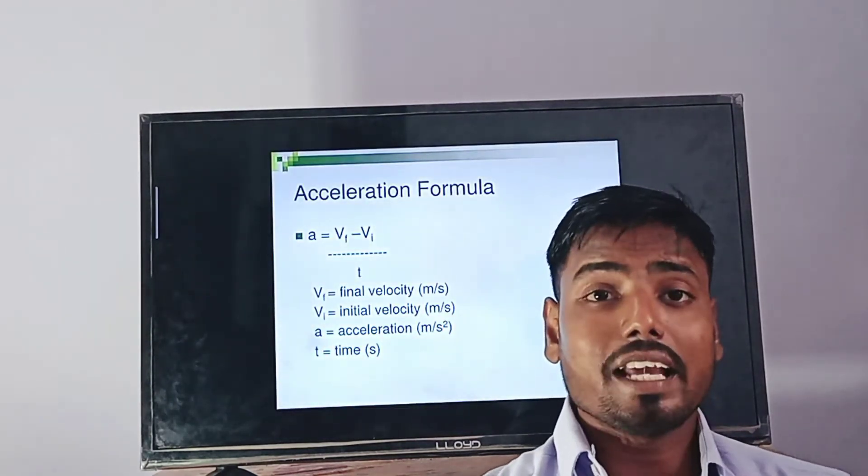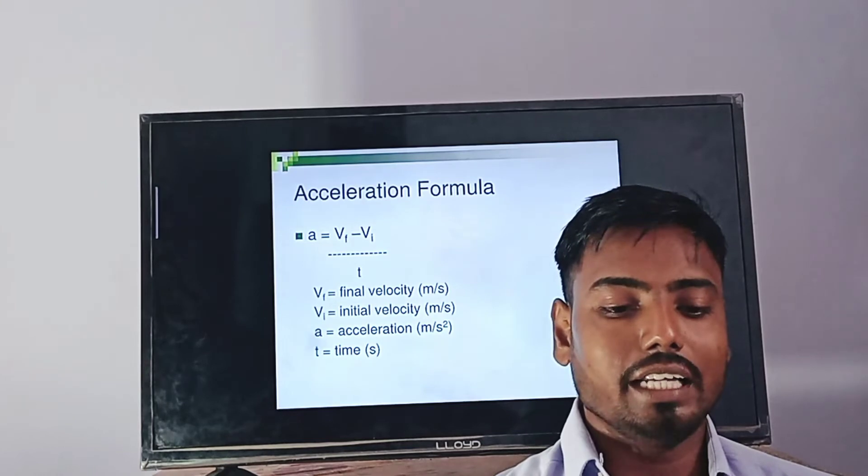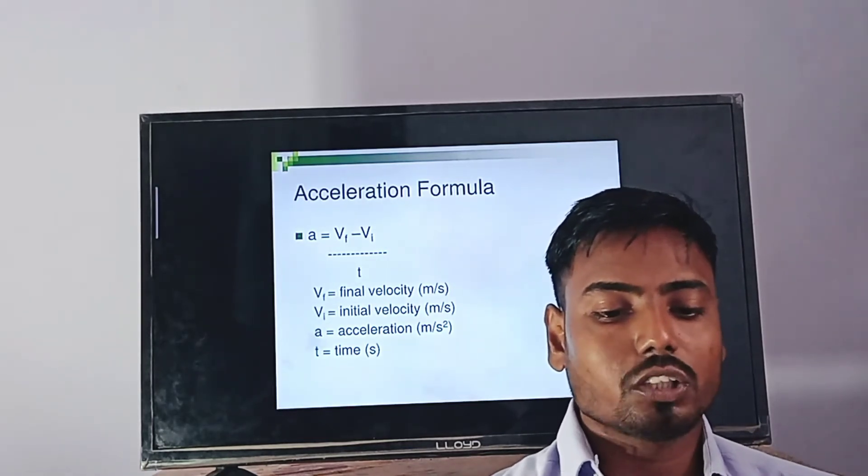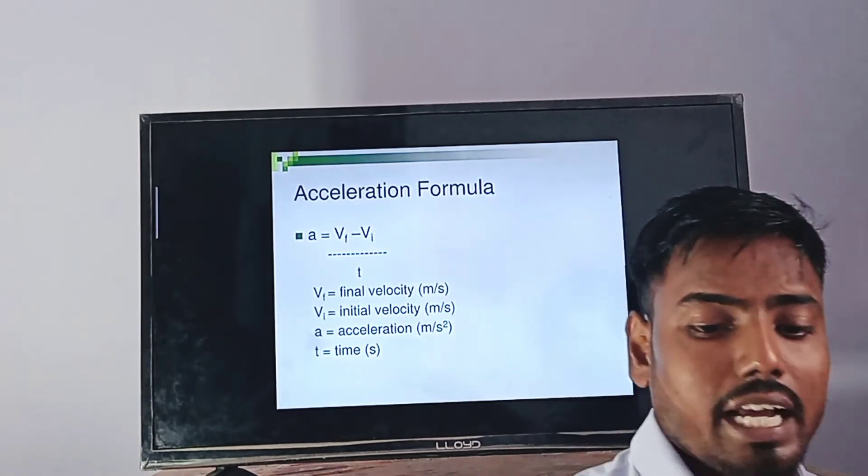Acceleration formula: a equals vf minus vi, where vf is final velocity, vi is initial velocity, a is acceleration, and t is time.